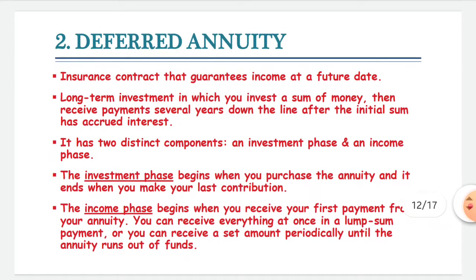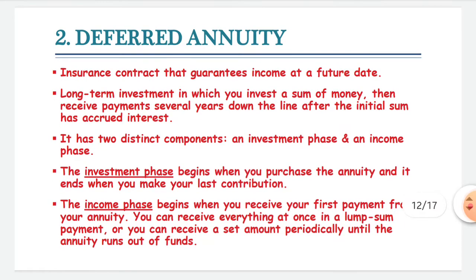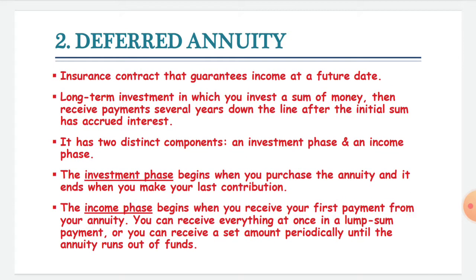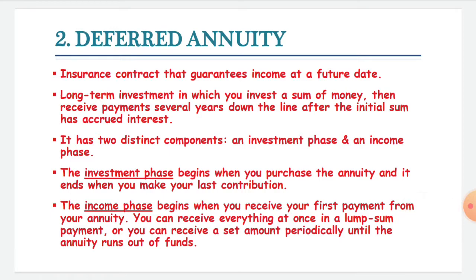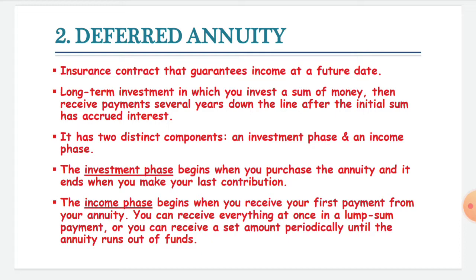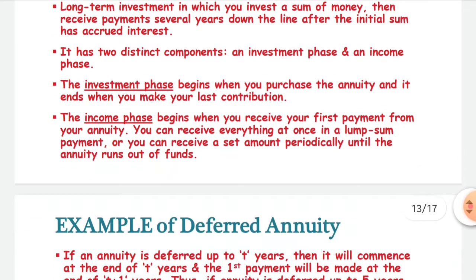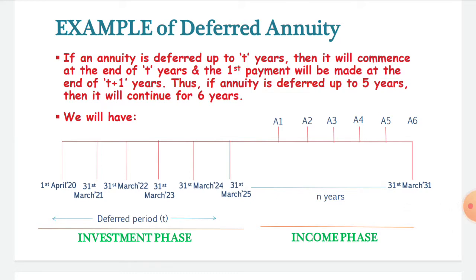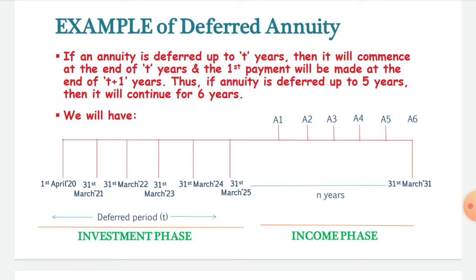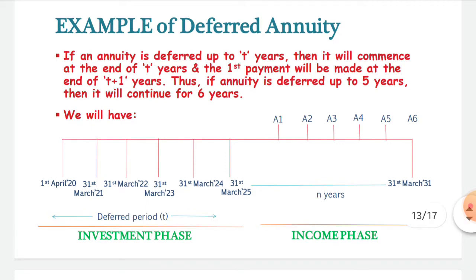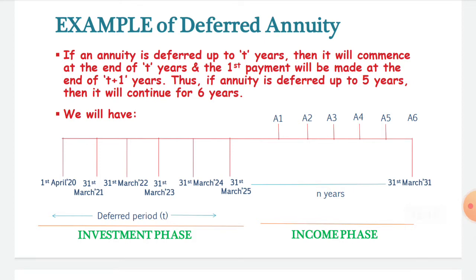The next type is deferred annuity. Deferred annuity is an insurance contract that guarantees income at some future date. You have to invest a sum of money — it is a long-term investment — and then you receive payments after the initial sum has accrued interest. It has two distinct components: the investment phase and the income phase. If an annuity is deferred up to T years, then it will start at the end of T years and the first payment will be made at the end of T plus 1 years. So if the annuity is deferred up to 5 years, then it will continue for 6 years.